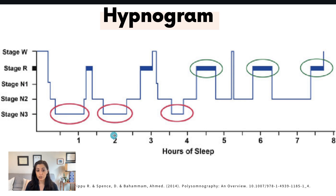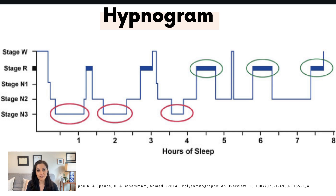What you'll notice right away is that there's more deep sleep — stage N3, slow wave sleep — in the first half of the night. Then REM periods get progressively longer, and there's more of them in the second half of the night. This is why we counsel our patients on maintaining a consistent sleep schedule, which helps to preserve this sleep architecture.